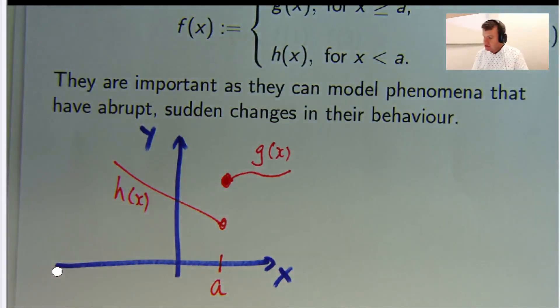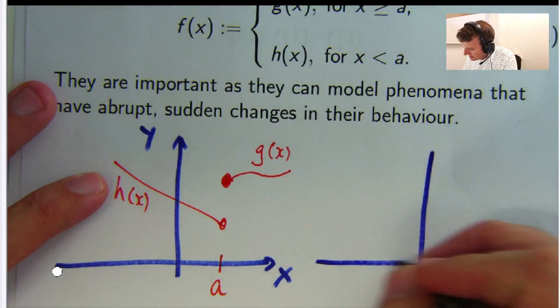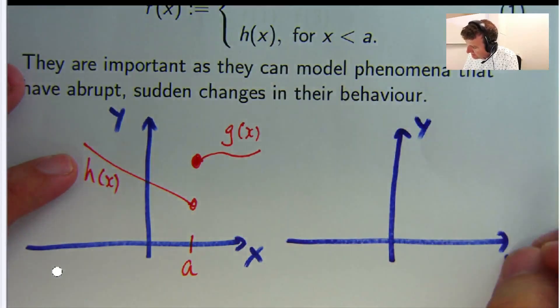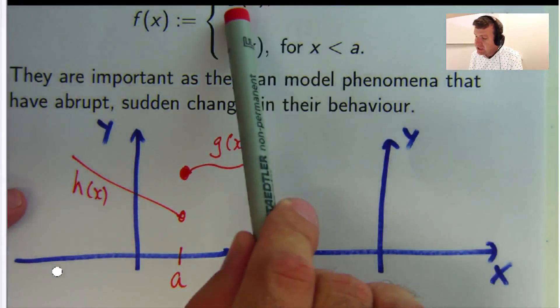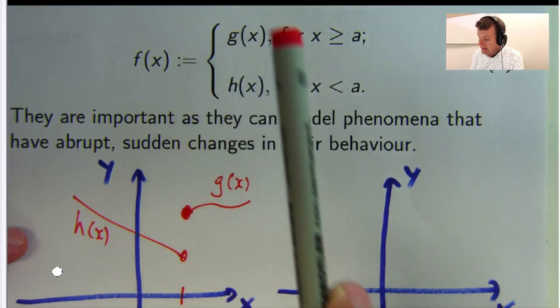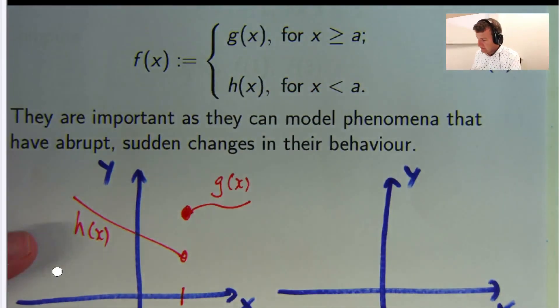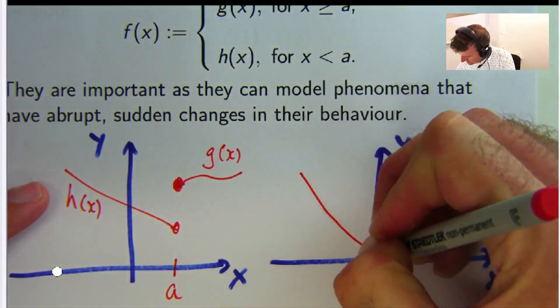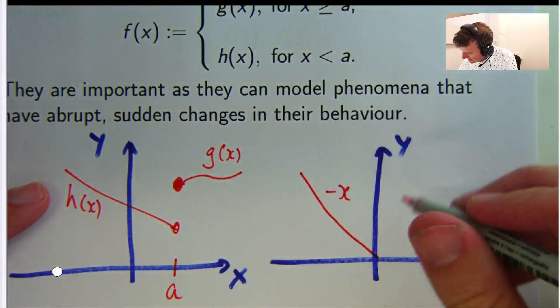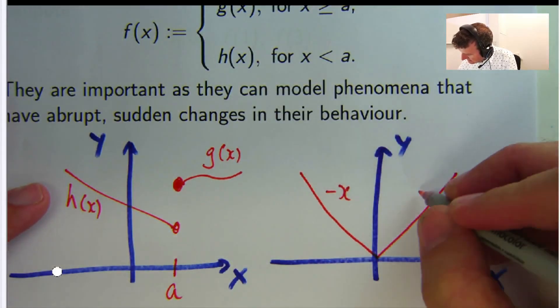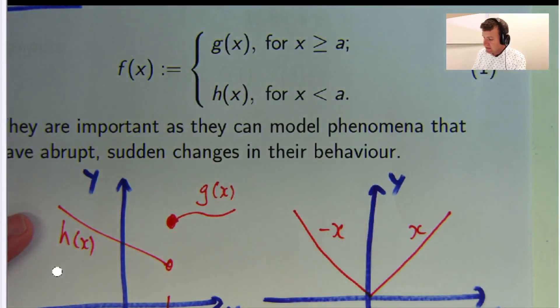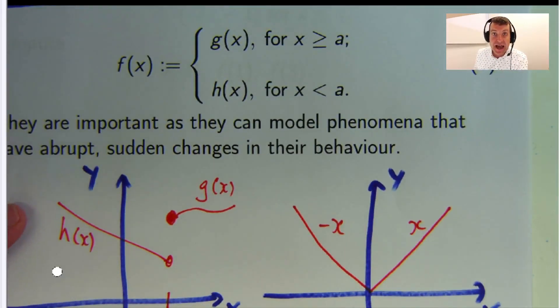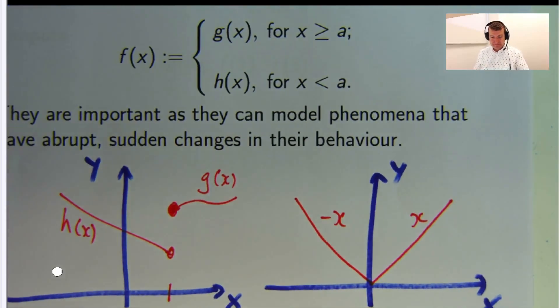but you don't need to have a jump, so for example, let me just give you another simple picture here. Suppose I had a split function where g was x and h was negative x. So you would have something like this then. Here's your negative x and here's your x. So in this case, g would be x, h would be negative x and you can see the change happens at a equals 0. So let's do an example and see how this fits together.